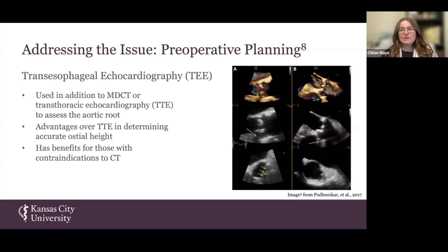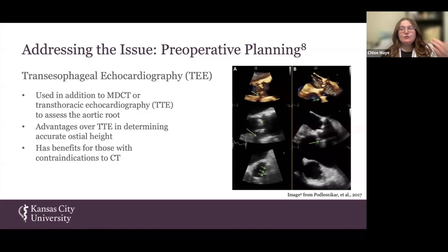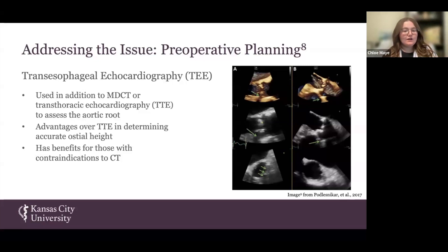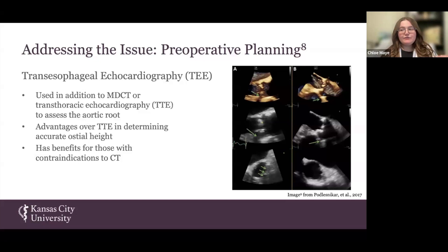Transesophageal echocardiogram can be used in addition to either MDCT or transthoracic echocardiogram to assess the aortic root. This can help overcome some of the pitfalls of TTE, like not being able to adequately assess the ostial height due to low resolution. Furthermore, it's beneficial for those that have contraindications to CT, such as renal dysfunction.